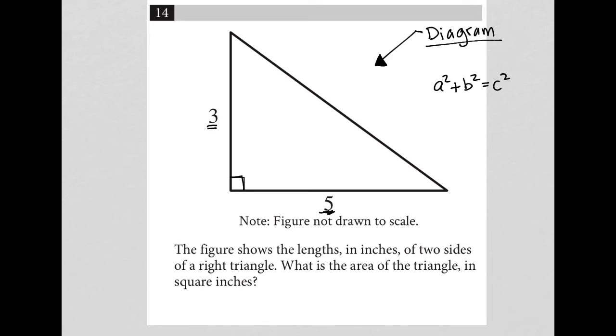I'm not going to find that yet, just to make sure I understand what the question is asking for. So let's see what the question is actually asking for. The figure shows the lengths in inches of two sides of a right triangle. What is the area of the triangle in square inches?